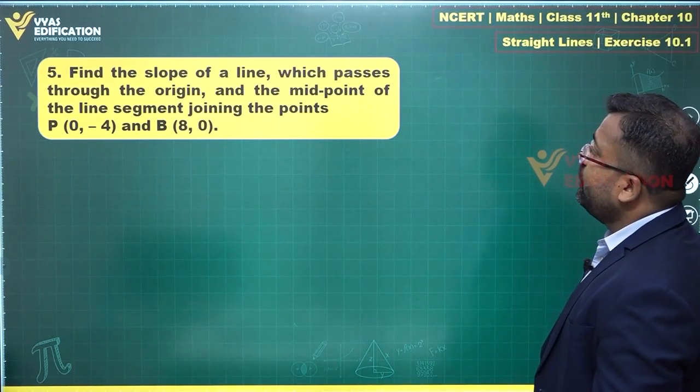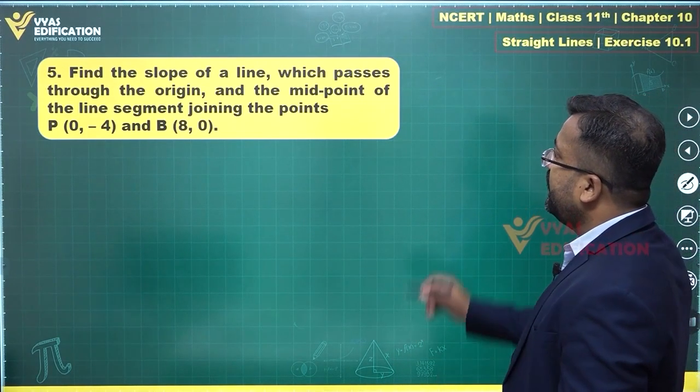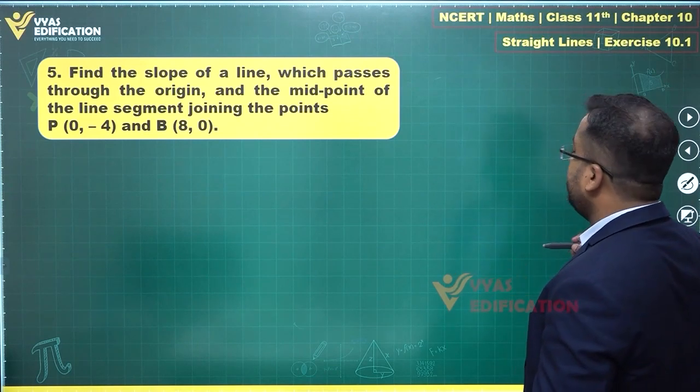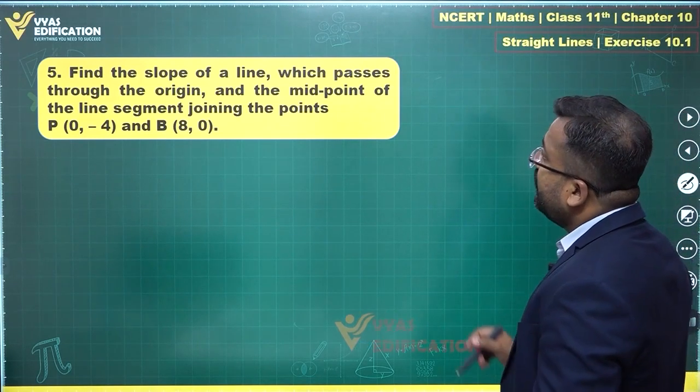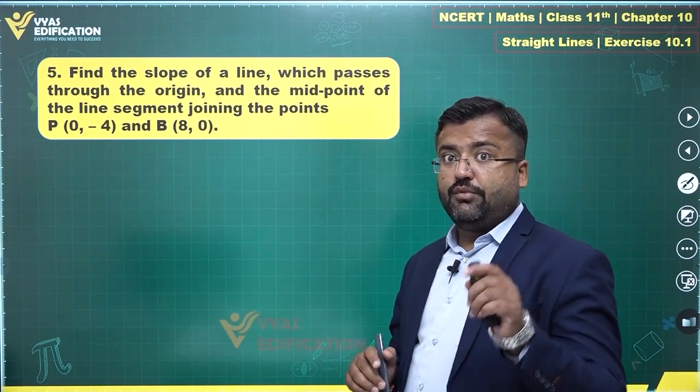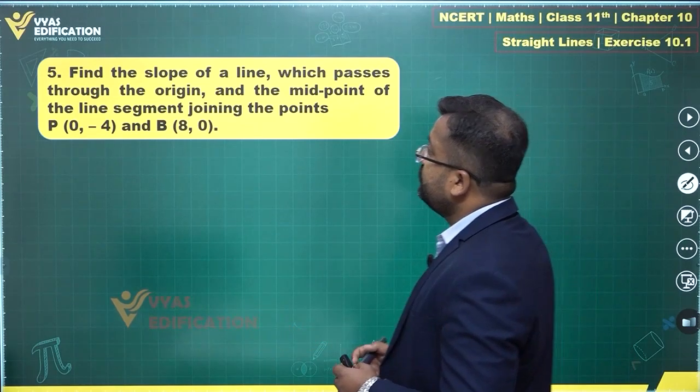The fifth question says find the slope of a line which passes through the origin and the midpoint of the line segment joining the points P(0, -4) and B(8, 0). Slope of a line is being asked which passes through the origin.